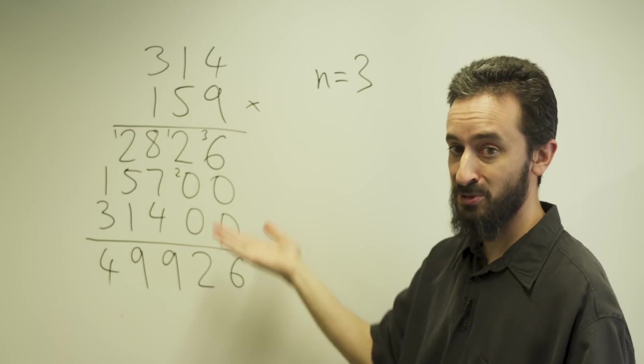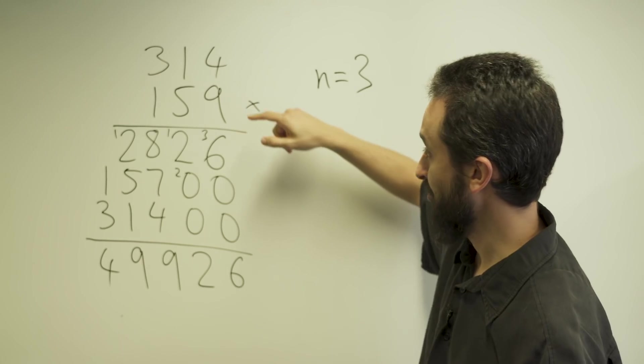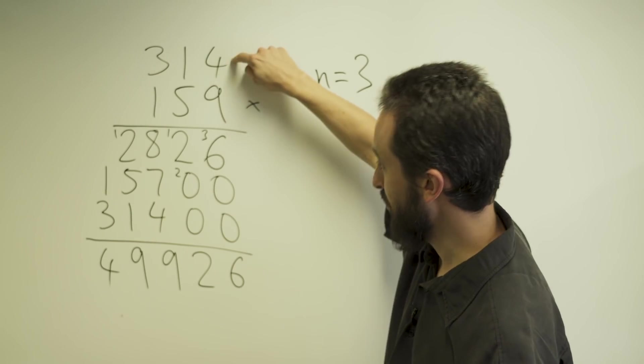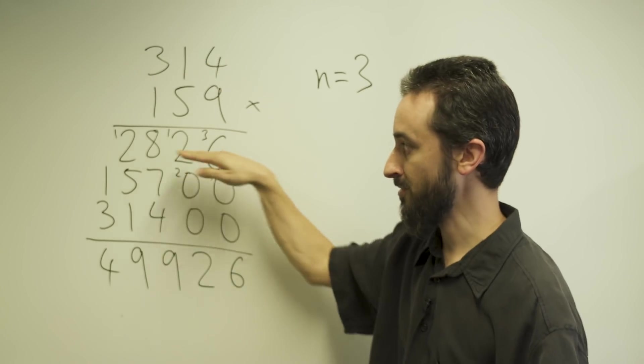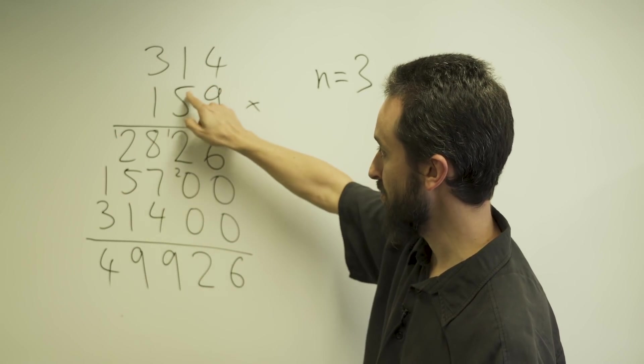To do this multiplication the way we learn at school, I have to start off by multiplying 9 times 4, then 9 times 1, then 9 times 3, and I write the answer here in the first line. So I've dealt with the first digit. Now I have to do the second digit, this 5.